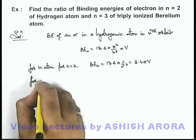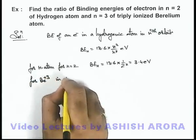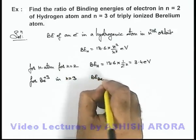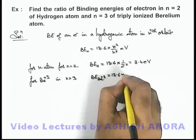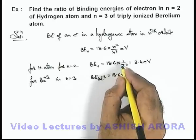Similarly for beryllium plus 3 in n = 3, we calculate the binding energy for the electron in beryllium³⁺. This can be written as 13.6 multiplied by Z, which we can substitute as 4.